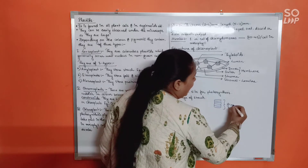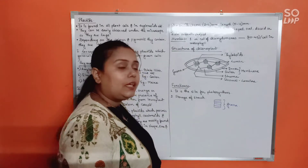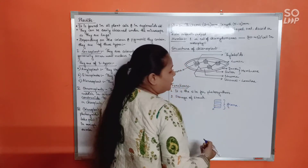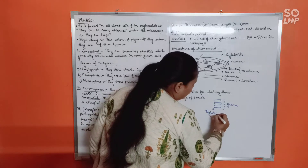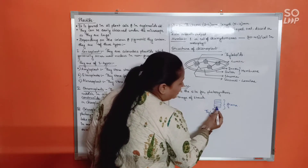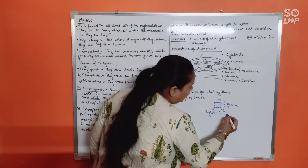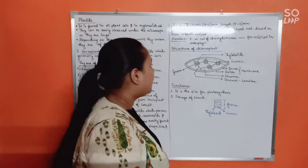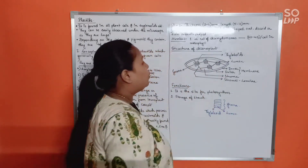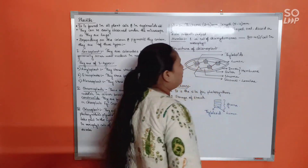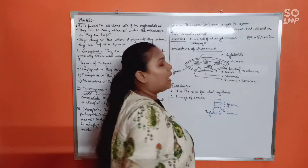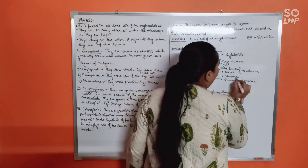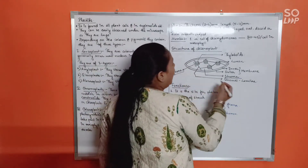Inside the inner membrane are stacks resembling piles of coins - these are known as grana. The individual units making up each granum are called thylakoids. The space between the two thylakoid membranes is known as the lumen. All the grana are interconnected by lamellar structures called stromal lamellae, and the entire system of grana and stromal lamellae is embedded in the matrix called stroma.